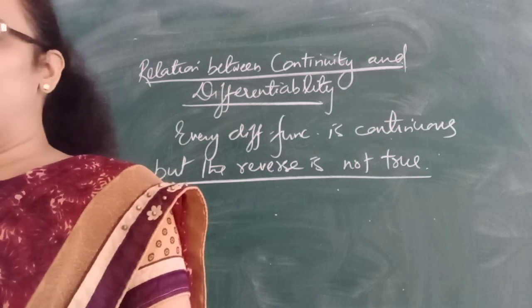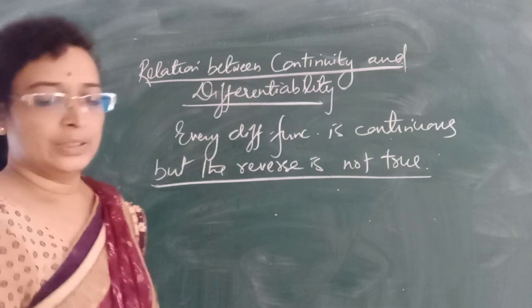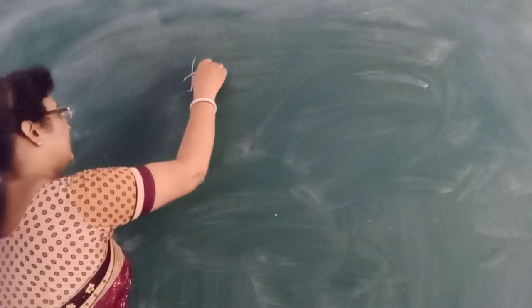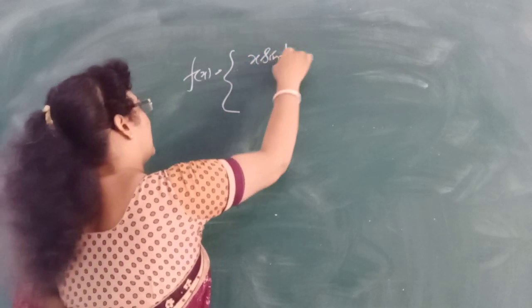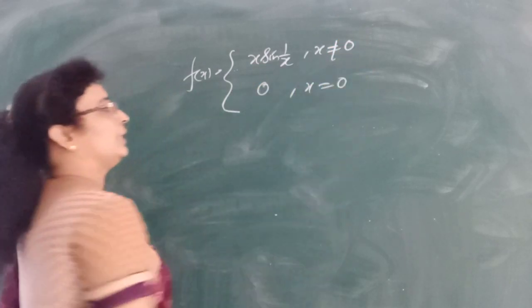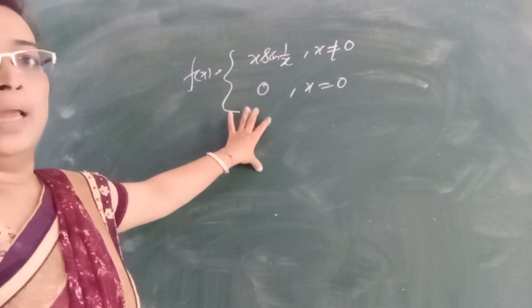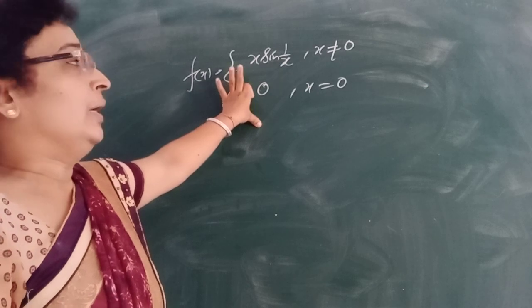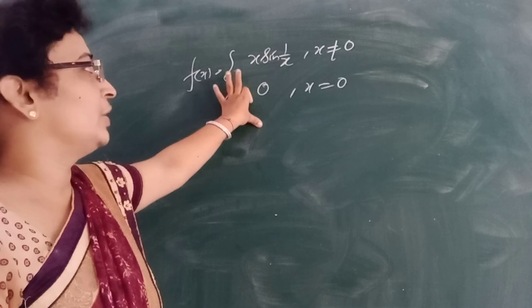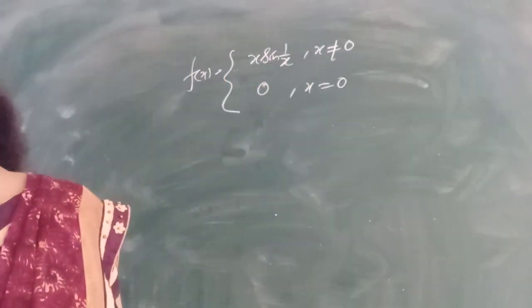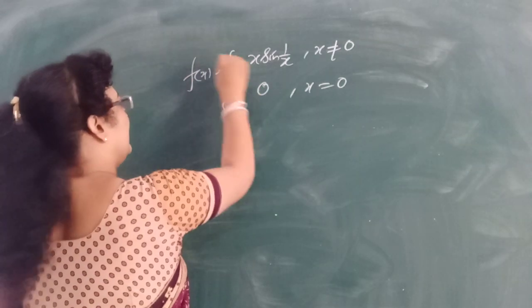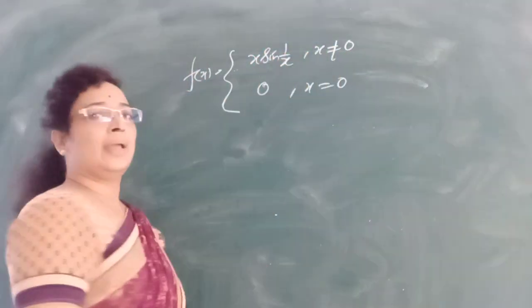Now let us take an example question so that we may learn how to check differentiability of a function at a point. Let f(x) = x·sin(1/x) if x ≠ 0, and f(x) = 0 if x = 0. We studied this function in exercise 6.1 for continuity and found that this function is definitely a continuous function. But it is not differentiable. The question reads: show that the function is continuous but not differentiable at x = 0.